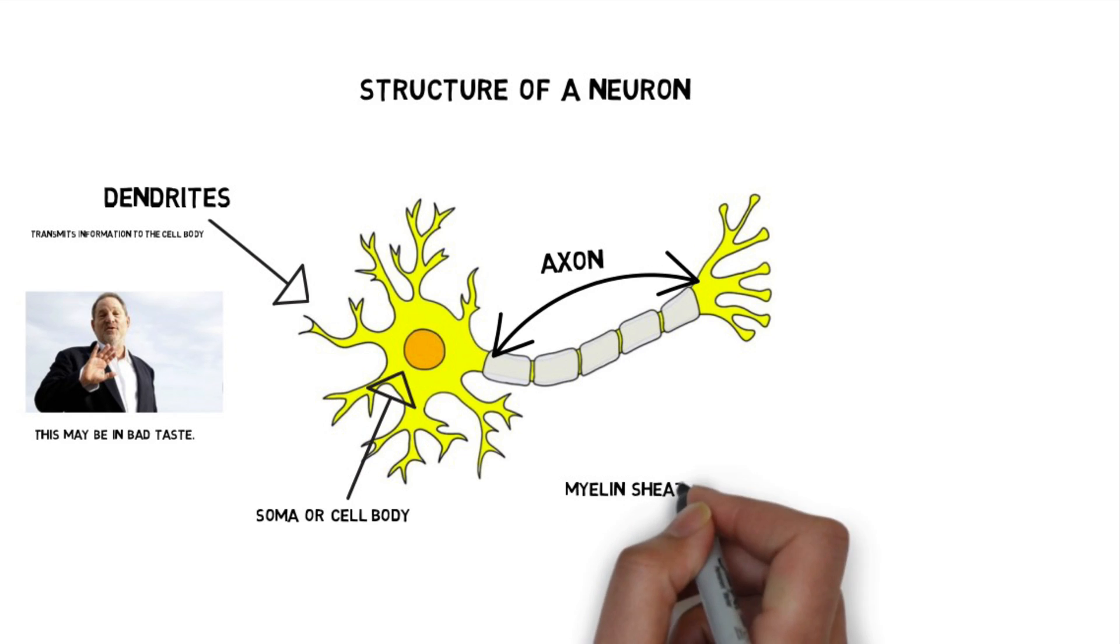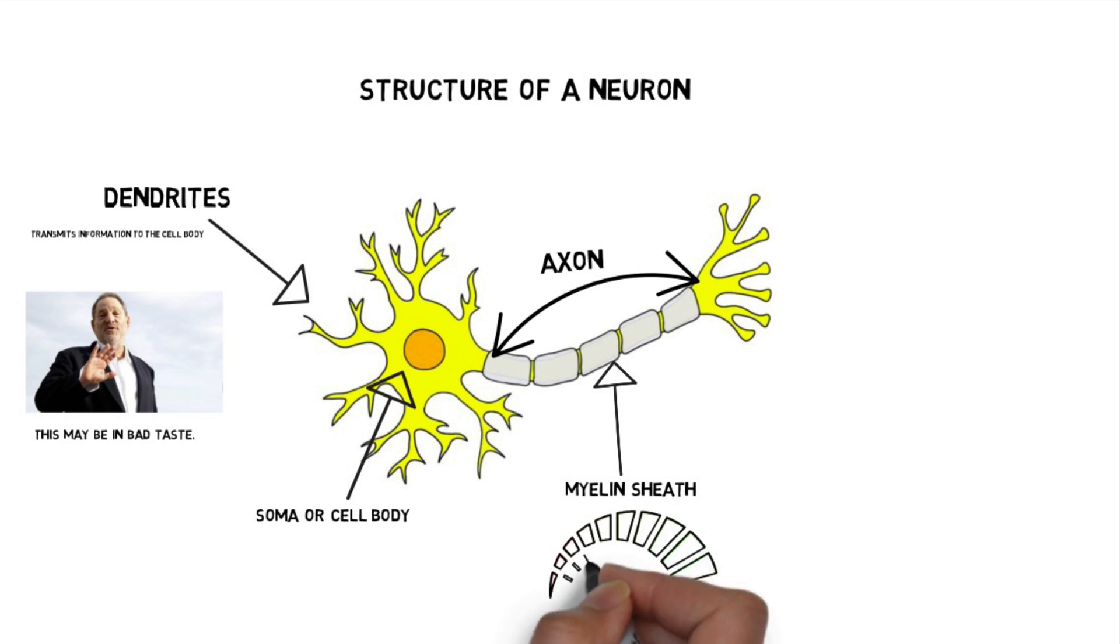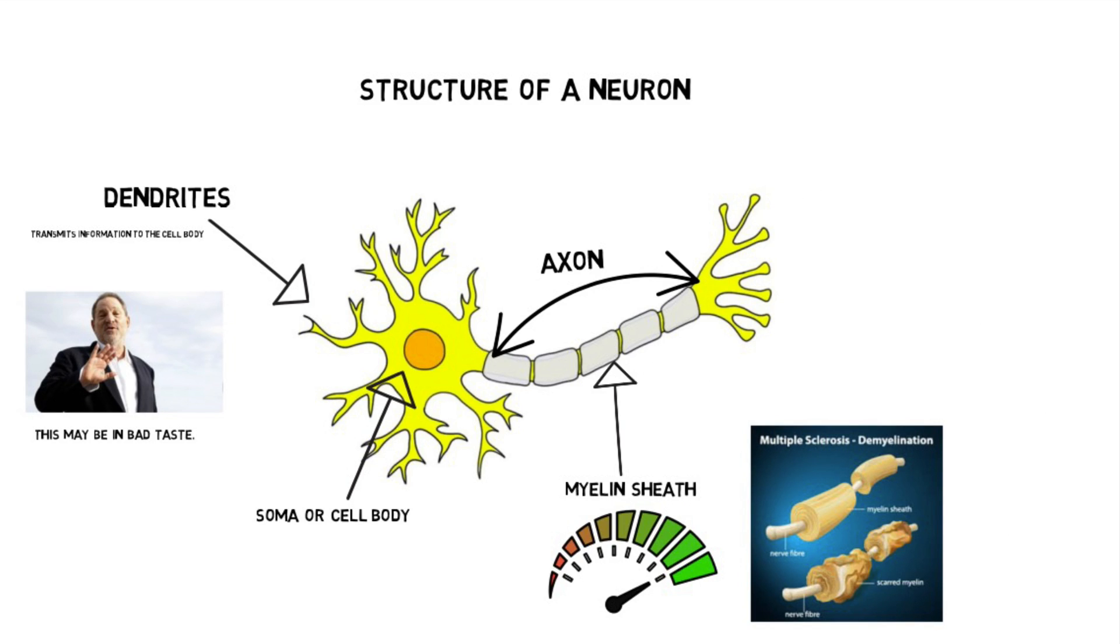Surrounding the axon is a layer of fat called the myelin sheath. The myelin sheath, like a rubber around a wire, helps insulate the electrical signal traveling down the axon. When the myelin sheath breaks down, you have a disorder called multiple sclerosis.